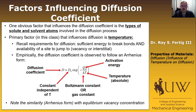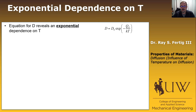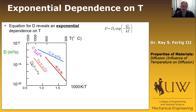The equation is exponential, meaning there's an exponential dependence of the diffusion coefficient on temperature. This answers why we don't worry about diffusion after the fact — for example, if we carburize something, why don't we worry about the carbon atoms diffusing back out? Because we carburize at a high temperature, and the diffusion coefficient is orders of magnitude smaller at operating temperatures.